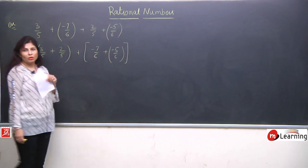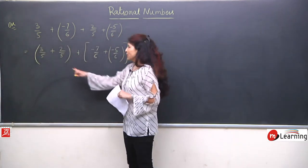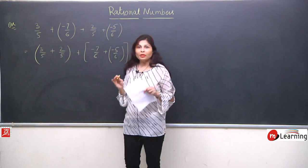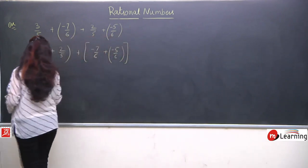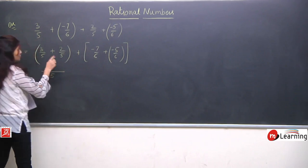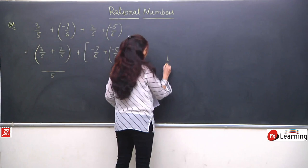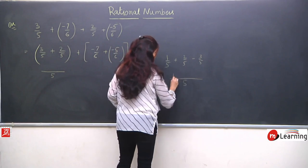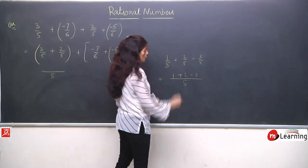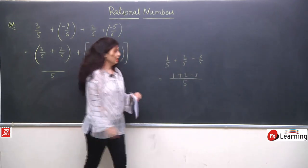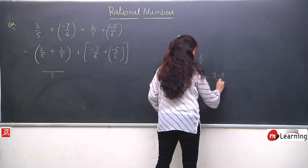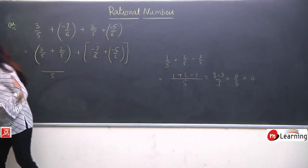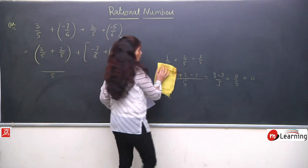Why have we done this? Because if we have the same denominator, LCM is very easy — there is no need to take LCM; we can directly add or subtract the numerator. But since you are not yet fully comfortable, I will solve it using LCM. Otherwise you can solve directly — for same denominators, we just write the numerator with sign, like 1/5 + 2/5 - 3/5 gives 0/5 = 0. But still we will take LCM and solve step by step.